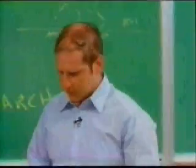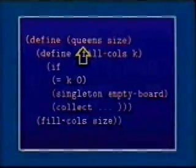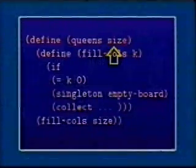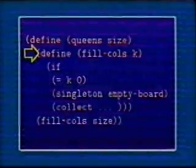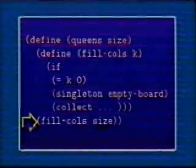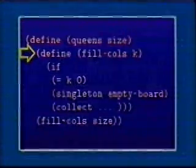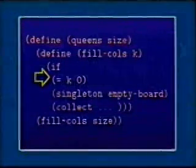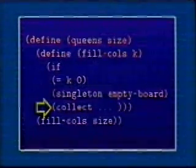All right, let's look at it. To solve the eight queens problem on a board of some specified size, I'm going to write a sub-procedure called fill columns. Fill columns is going to put down queens up through column k. Here's the pattern of the recursion. I'm going to call fill columns with the size eventually. Fill column says how to put down queens safely in the first k columns of this chessboard with a size number of rows in it. If k is equal to 0, then I don't have to put anything down, so my solution is just an empty chessboard. Otherwise, I'm going to do some stuff, and I'm going to use collect.